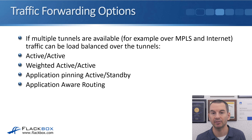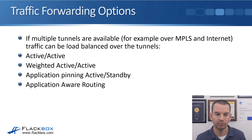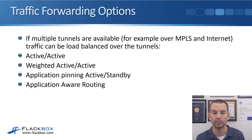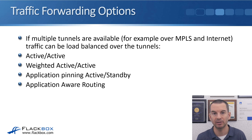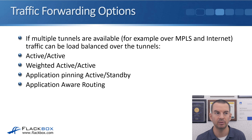If multiple tunnels are available — for example, MPLS and internet — traffic can be load balanced over those different tunnels. For load balancing, you can use active-active, sending traffic equally over both links, or weighted active-active if you want to send more traffic over a higher-quality connection like MPLS. You can also do application pinning with active standby, sending email and web traffic over one connection and voice and video traffic over a different connection.